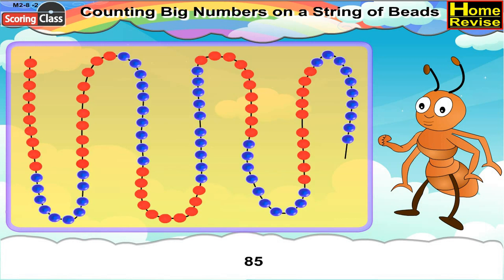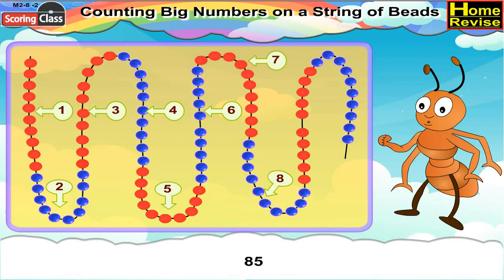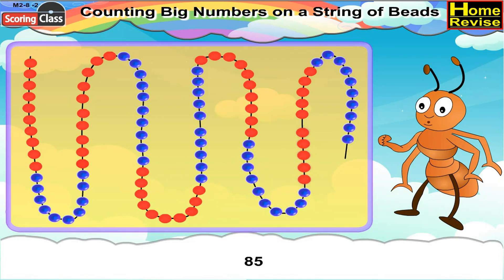Number 85. For number 85, first we will take 10 red beads, followed by 10 blue beads. Then again 10 red beads, followed by 10 blue beads. Followed by 10 red beads, further followed by 10 blue beads. Then followed by 10 red beads, further followed by 10 blue beads. Now, add 5 more red beads to it. Place the clip after 5 more red beads and this is your number 85.